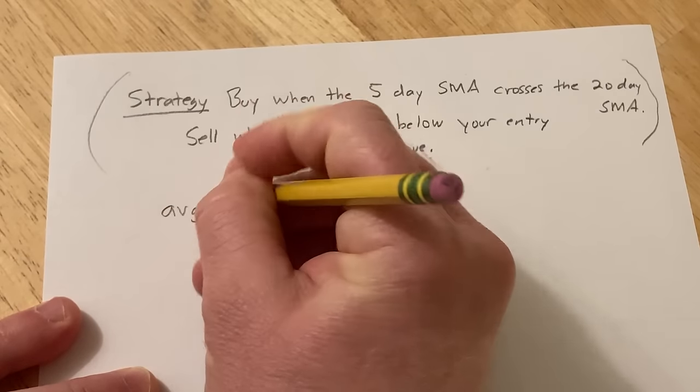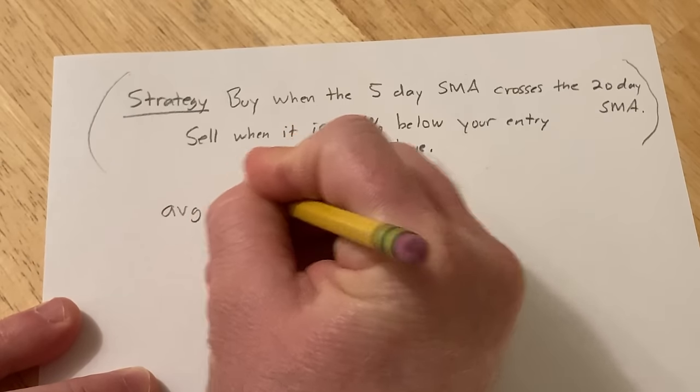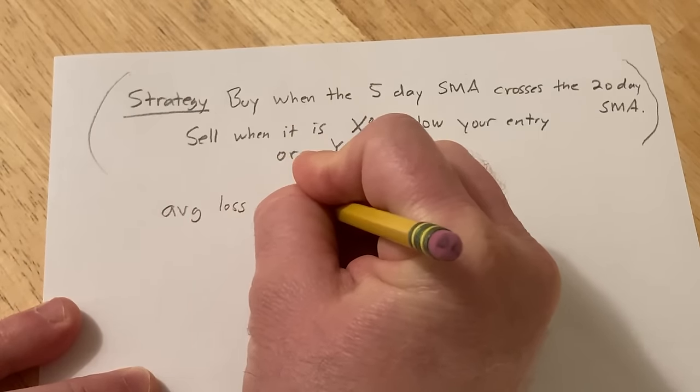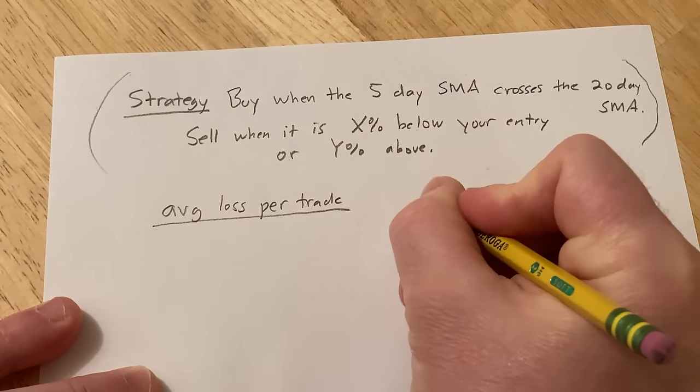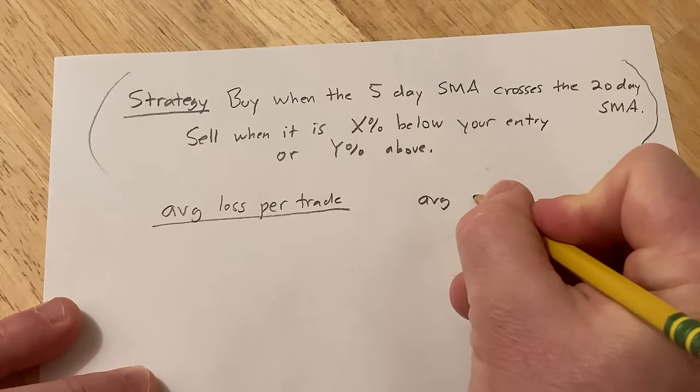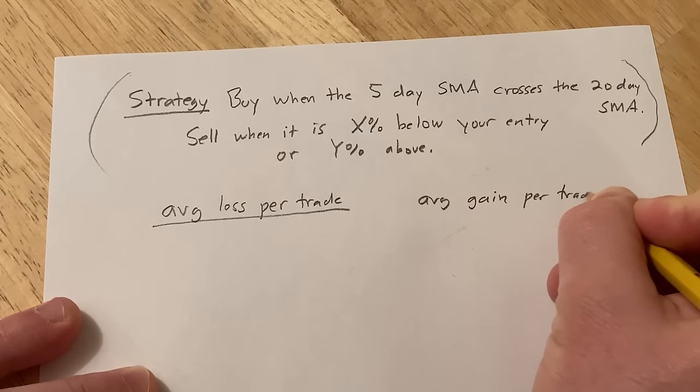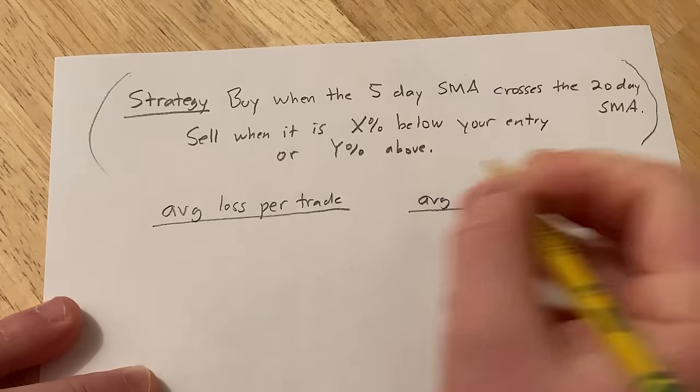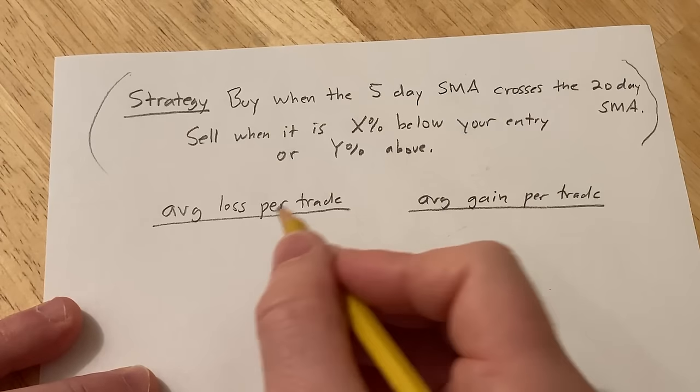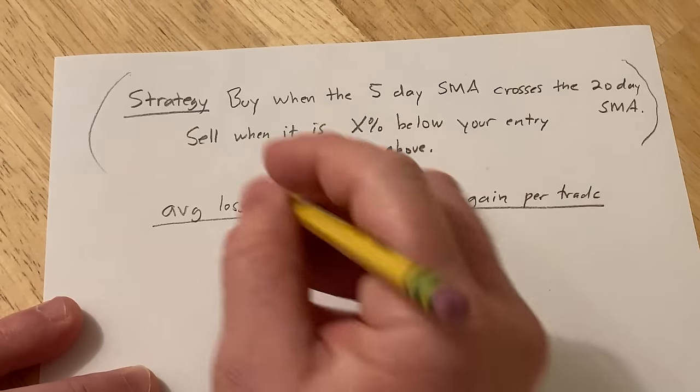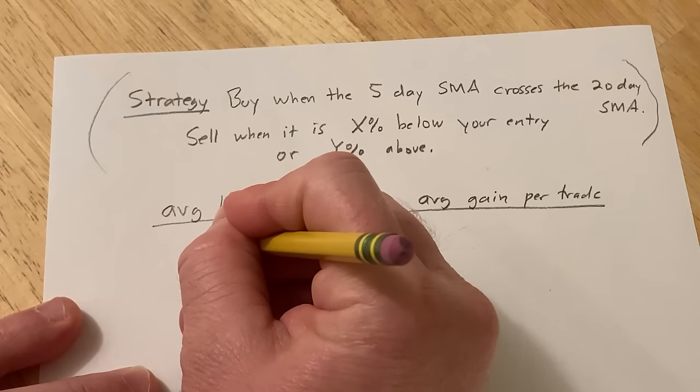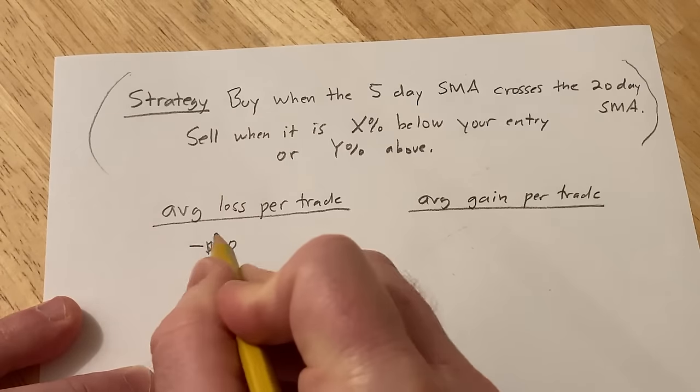So you have your average loss per trade. And let's say that on average, you lose $90.